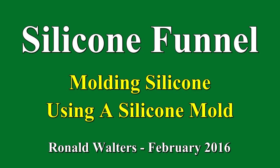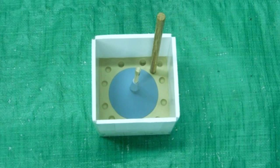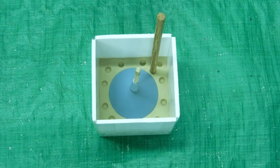I wanted to try using a silicone funnel. It would make it easier to pour resin into the molds and the resin wouldn't stick to the silicone.